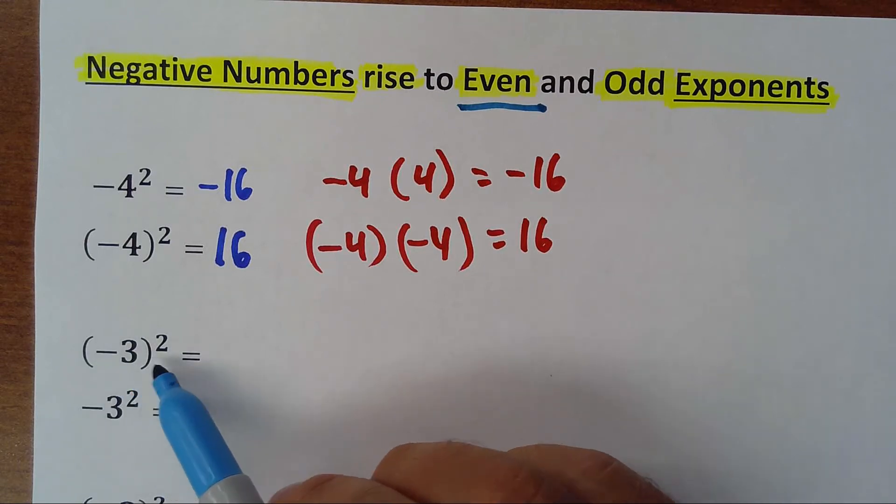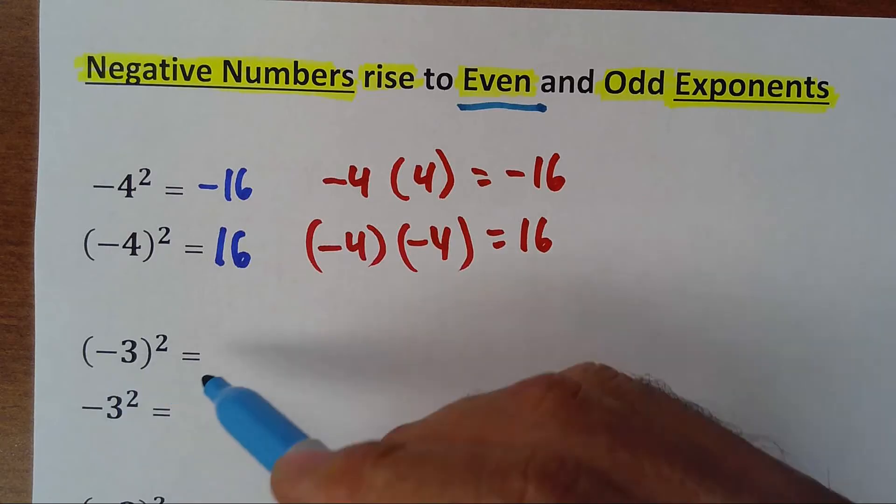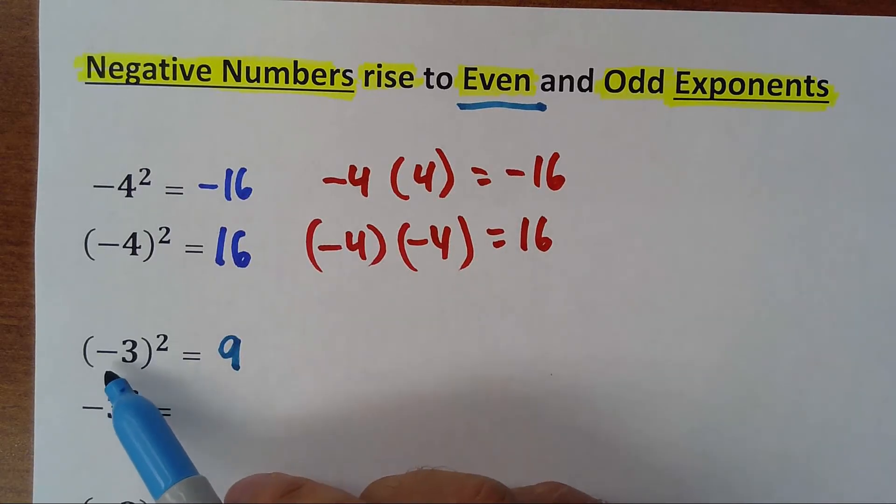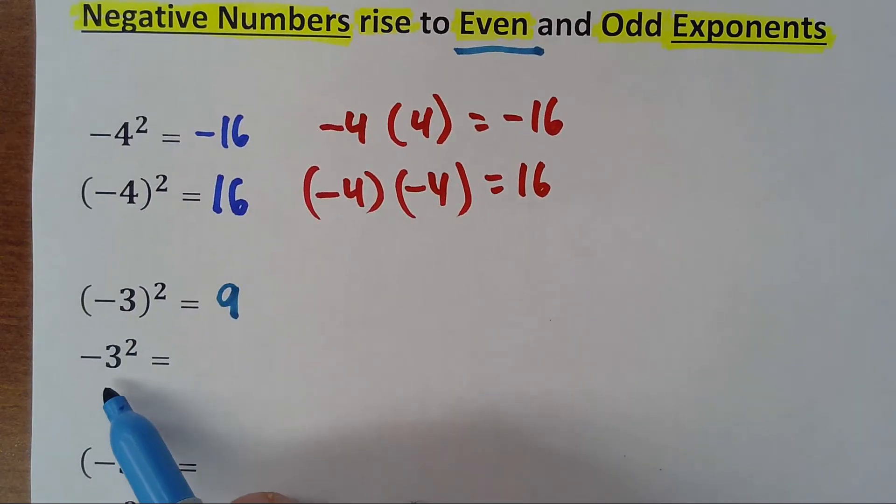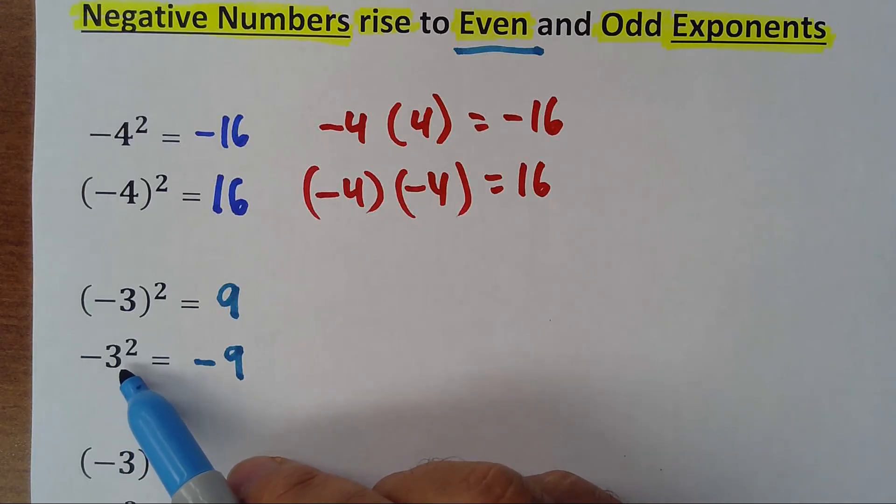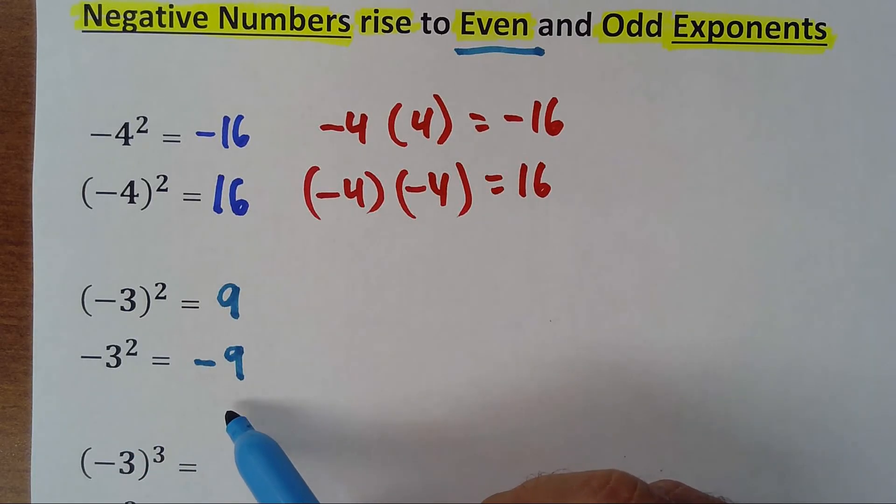inside of parenthesis, the answer always will be positive. So, in this case, this one is 9 positive, because it's negative 3 times negative 3. And in this case, the answer is negative 9, because it's negative 3 times 3. That's why it's negative 9.